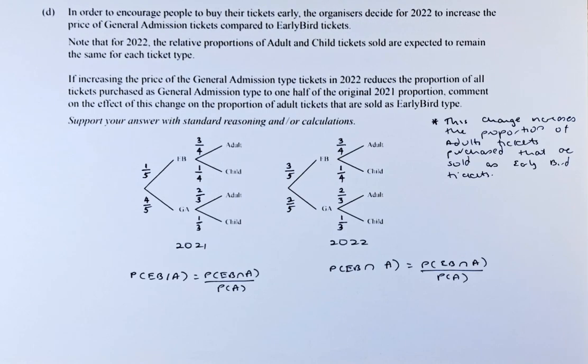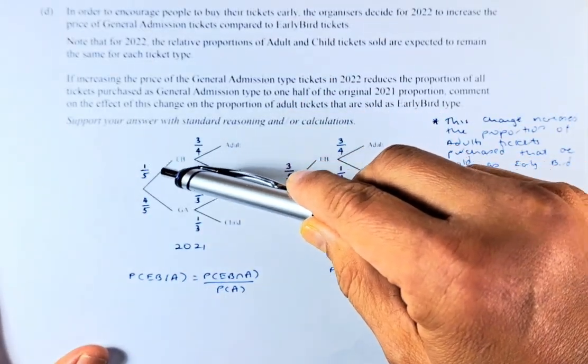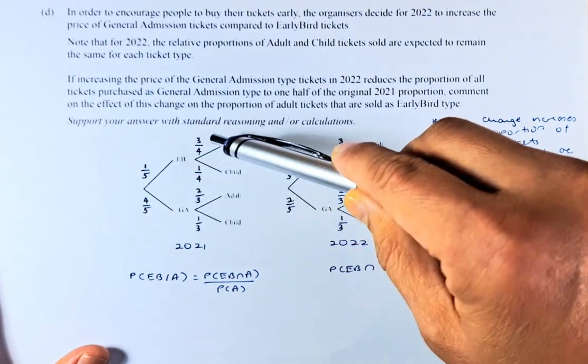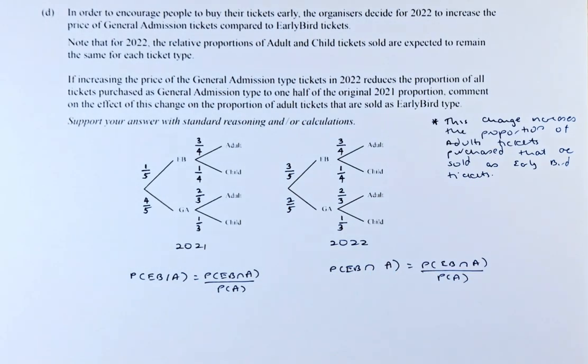So this is the first part, this is 2021. We have done earlier: early bird one-fifth, general admission four-fifths, and three-quarters, one-quarter for adult and child, and two-thirds for adult and one-third for child.